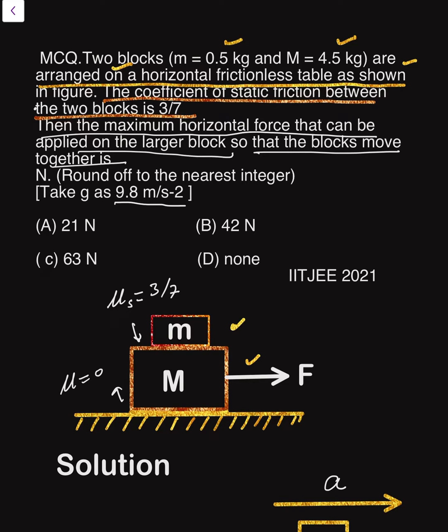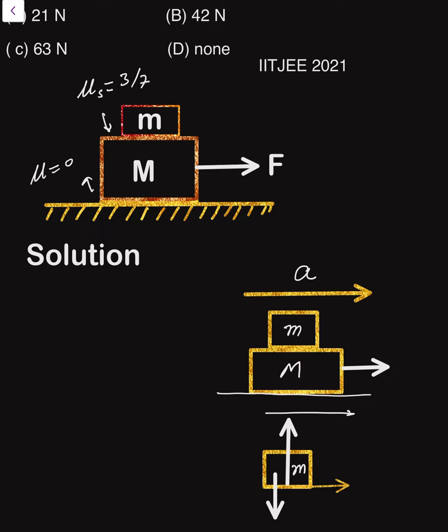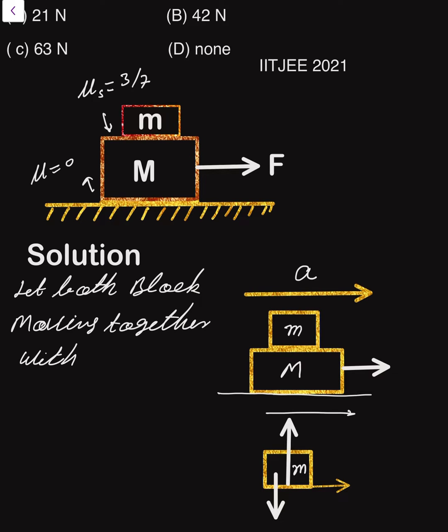So how can we do it? First of all, if you see very carefully, our motive is to determine capital F max. Let both blocks move together with the same acceleration.